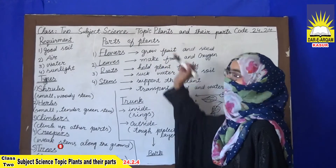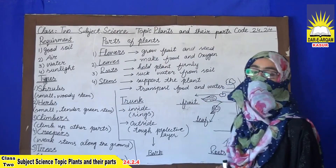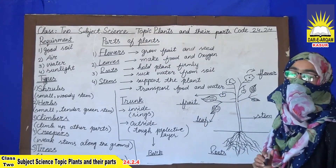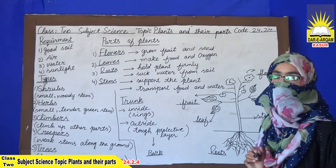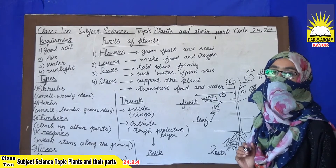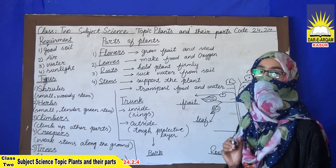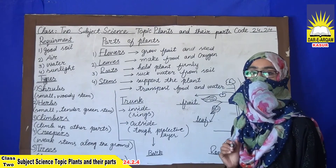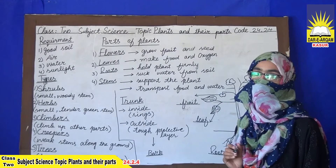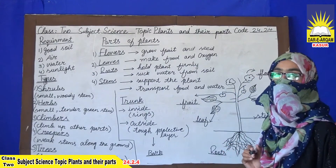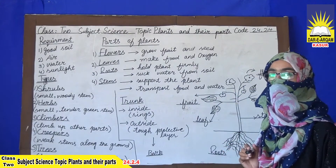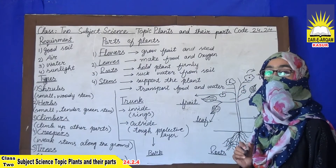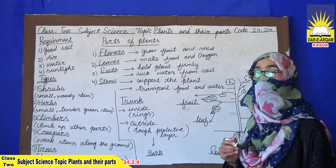What are plants? Plants are living things that need food, water, and air. All these things are necessary to grow a plant.